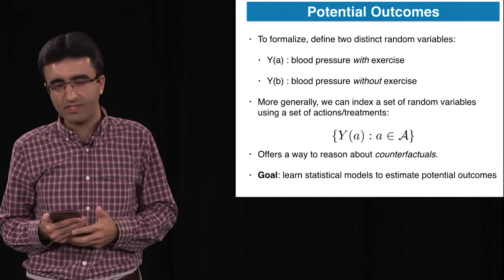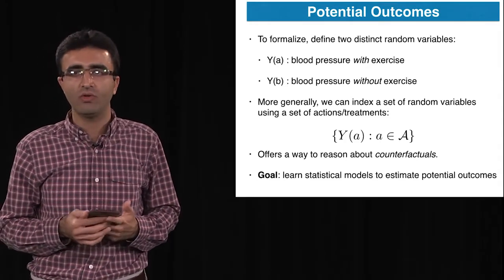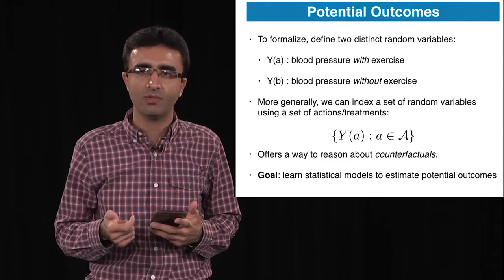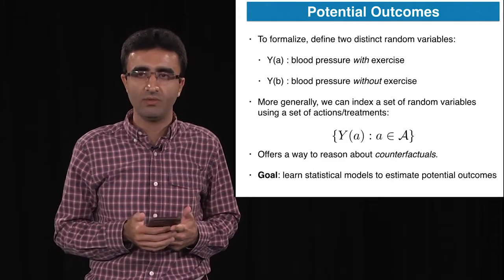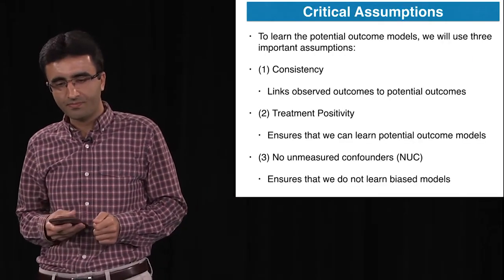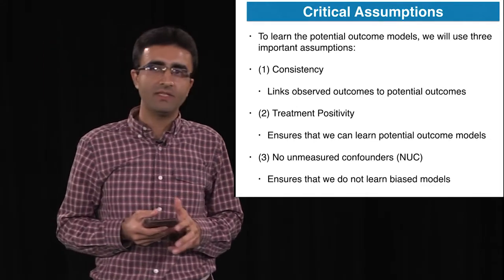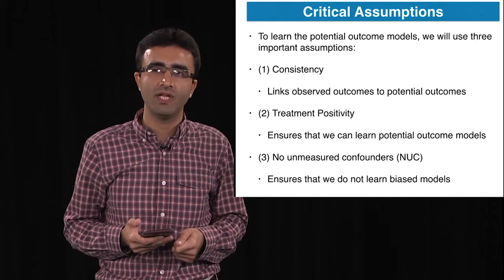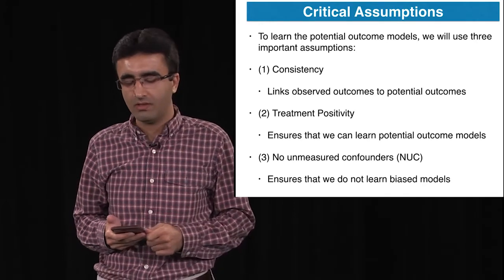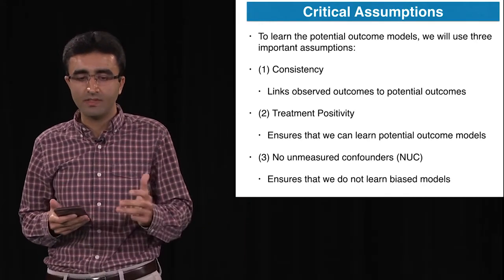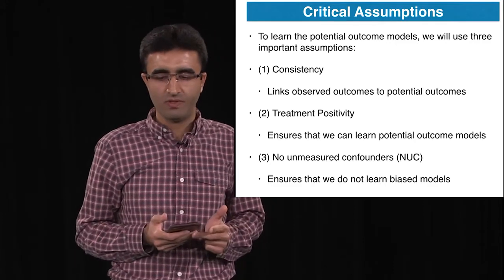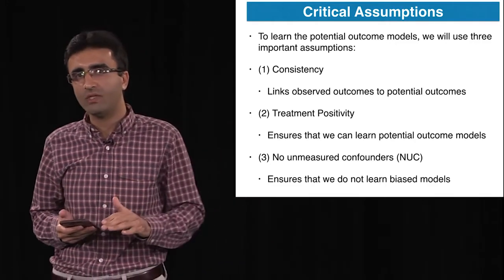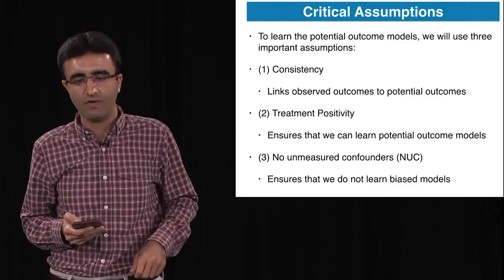For the rest of this section, we'll talk about assumptions under which we can estimate these potential outcomes using observational data. There are three assumptions that if they hold allow us to estimate potential outcomes from observational data: consistency, treatment positivity, and no unmeasured confounders.